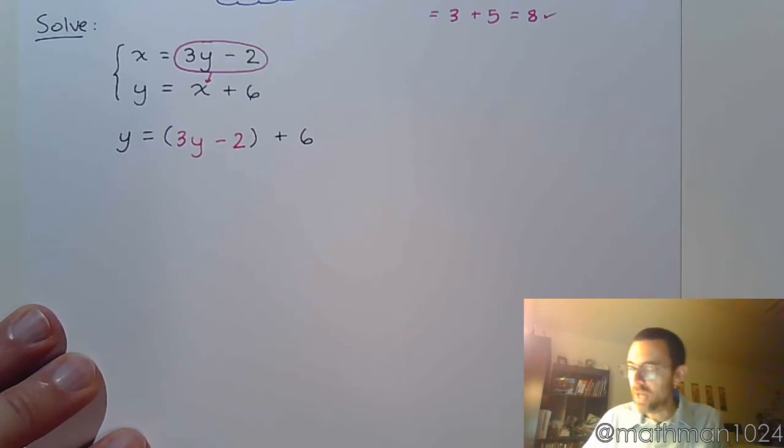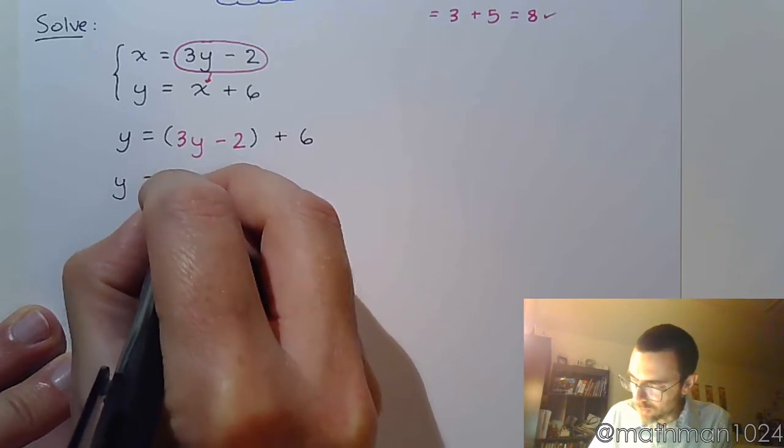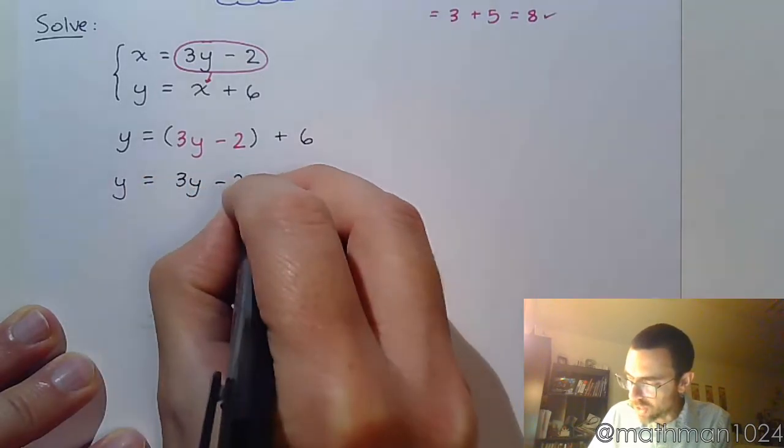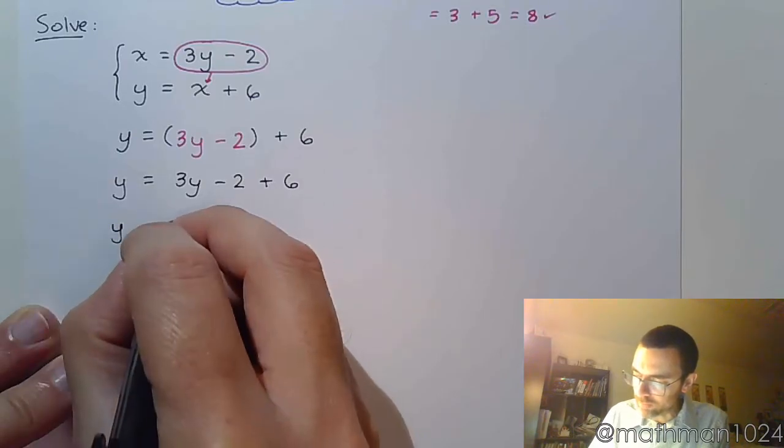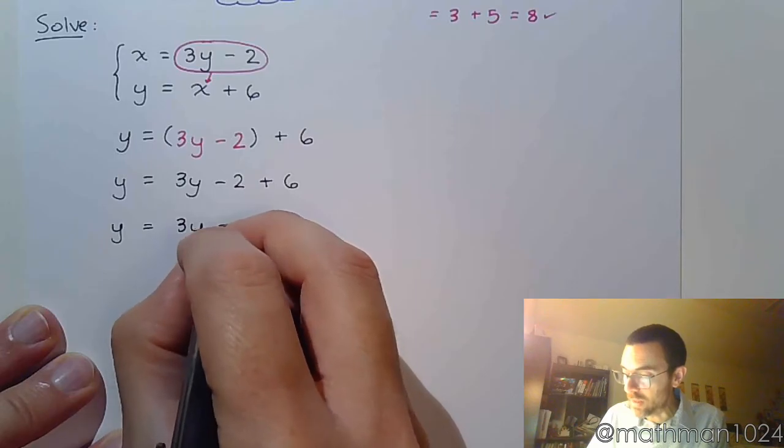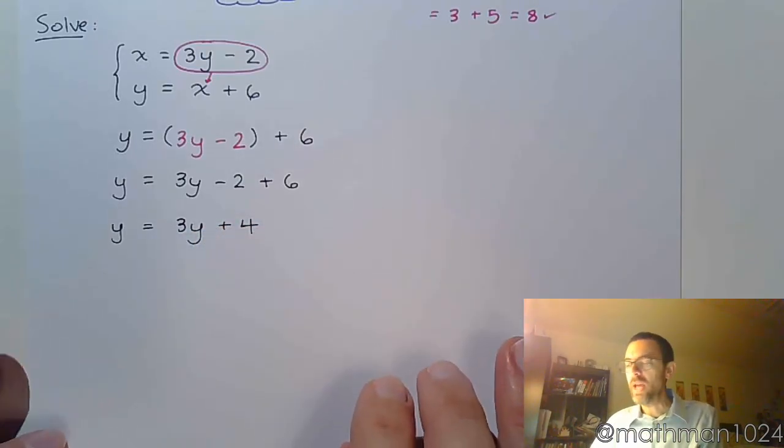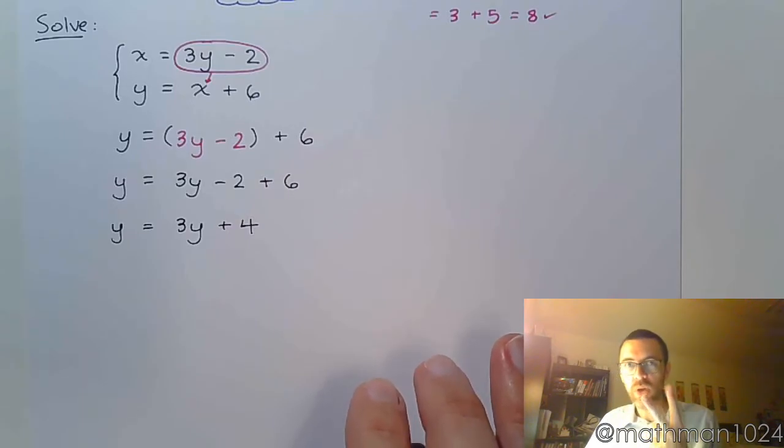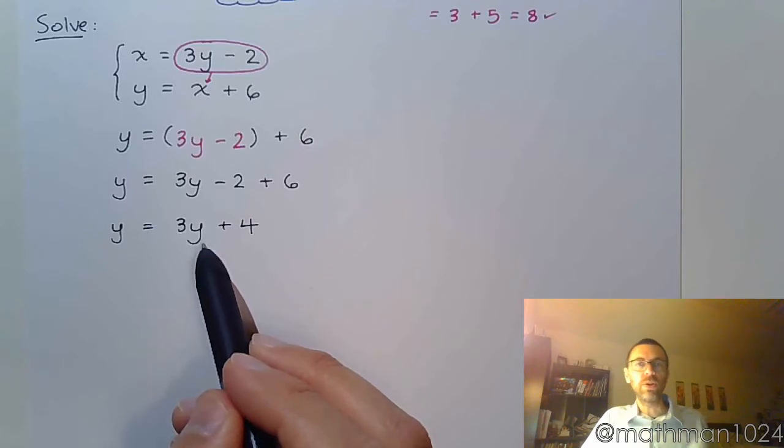So we plug it in, and then we have a nice equation to solve. I can drop those parentheses because nothing else is going on with that. Let me go ahead and clean up the right side of the equation. So that's Y equals 3Y plus 4. So as you see here, we had two equations with two unknowns, and now we just have one equation, and it's a single unknown variable.